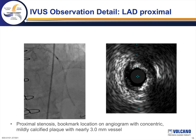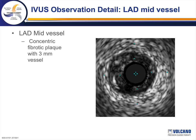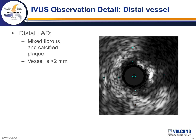Looking at our IVUS data in more detail: the co-registration angiogram with the IVUS probe in the proximal LAD shows a nearly 3 mm vessel with concentric plaque and a significant stenosis. In the mid-vessel, there is also concentric fibrotic plaque with the LAD again about 3 mm but showing a highly significant stenosis. In the distal LAD, the IVUS shows the vessel is greater than 2 mm and probably close to 2.5 mm, with mixed fibrous and calcified plaque and a severe stenosis where the residual lumen barely allows the IVUS probe to pass.